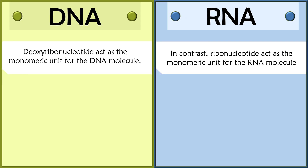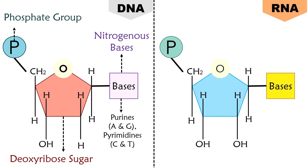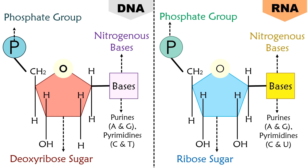The deoxyribonucleotides act as the monomeric unit for the DNA molecule. On the other side, ribonucleotides are the monomeric units for the RNA molecule. In DNA, when the sugar molecule combines with nucleobases, they form nucleosides — deoxyadenosine, deoxyguanosine, deoxycytidine, and deoxythymidine are the four types of nucleosides in DNA. When the phosphate group attaches to these nucleosides, they form nucleotides. Similarly, in RNA, ribonucleotides are formed by the combination of ribose sugar, nucleobases, and phosphate assembly.